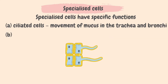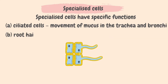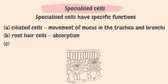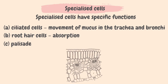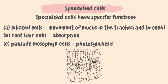Root hair cells are present in the roots of plants and they help in the absorption of minerals and water from the soil. Palisade mesophyll cells are present in leaves and contain chloroplasts that help in photosynthesis.